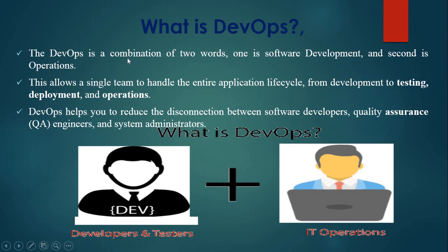DevOps is a combination of two words: one is software development and the second is operations. This allows a single team to handle the application lifecycle from development to testing, deployment, and operations. Developers and IT operations are included into a single team. DevOps helps to reduce the miscommunication or disconnection between software developers, quality assurance engineers, and system administrators.